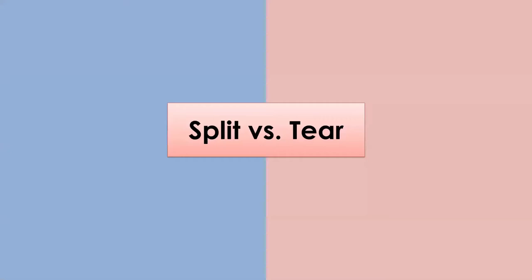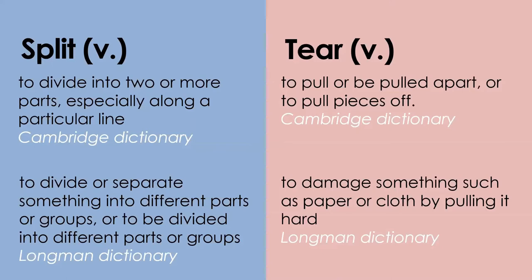那我們接下來看到第二個詞組 Split vs. Tear 它們的差別。首先我們看到Split在劍橋字典中的定義是：To divide into two or more parts, especially along a particular line。那在朗文字典的定義是：To divide or separate something into different parts or groups, or to be divided into different parts or groups。那Tear在劍橋字典的定義是：To pull or to be pulled apart, or to pull pieces off。那在朗文字典的定義是：To damage something such as paper or clothes by pulling it hard。